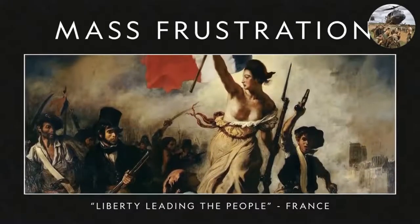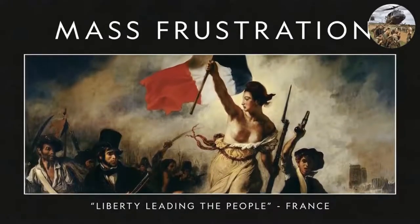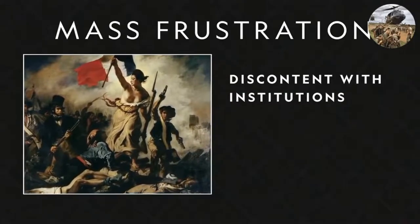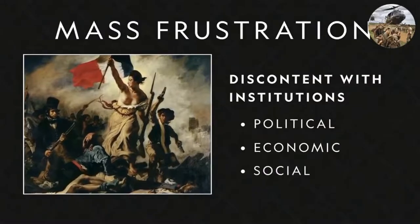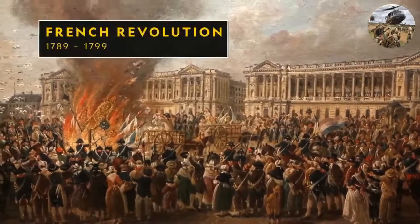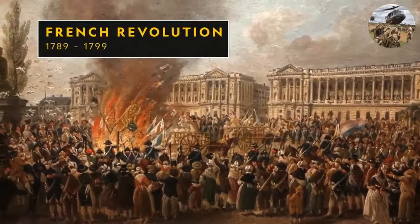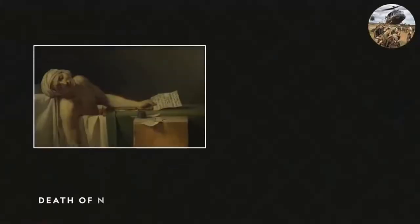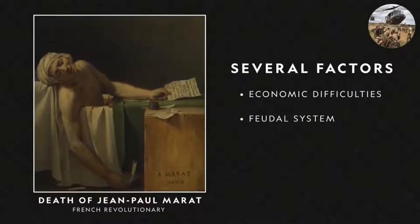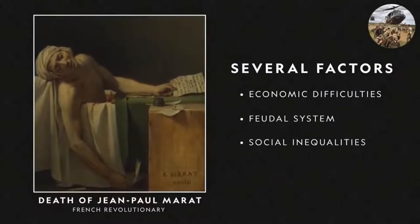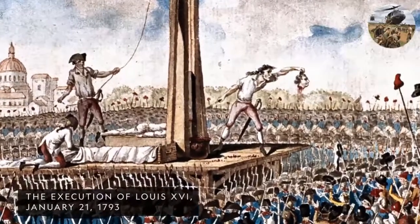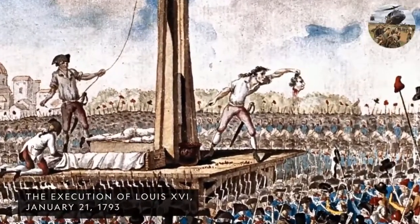Frustration among the masses also plays a critical role in social upheavals. When a large percentage of a population feels grave discontent with their political, economic, and social institutions, they may revolt. Only a few years after the American Revolution, the people of France initiated their own revolt. Several factors, including economic difficulties and an antiquated feudal system that fueled social inequalities, all contributed to the dissent. Ultimately, French society permanently ousted their monarchy and replaced it with a republic.